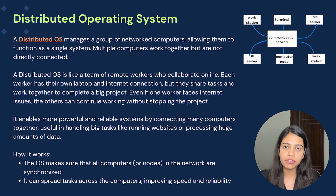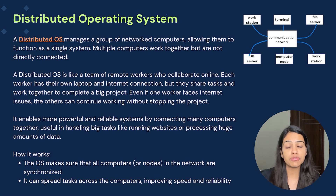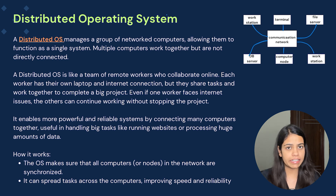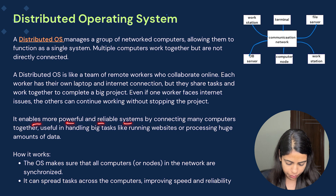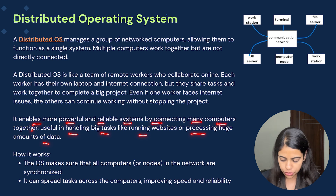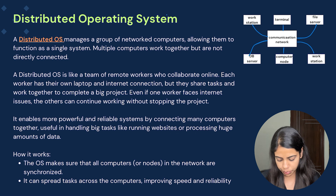Consider an example where a team of remote workers are working on a project. Every remote worker has their own laptop and their own internet connection, but there could be some internet issues with one of the remote workers. Other workers can come ahead and complete that particular task so that the project is not stopped. This is an example of a distributed OS where computers are not directly connected but perform tasks together, and if one fails, others make sure the task is completed. It enables more powerful and reliable systems, useful in handling big tasks like running websites or processing huge amounts of data.